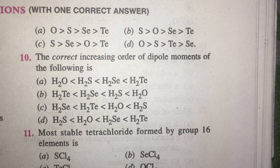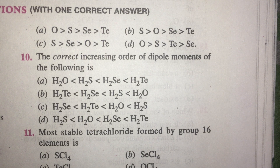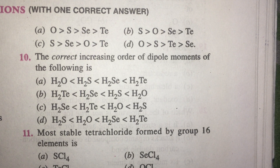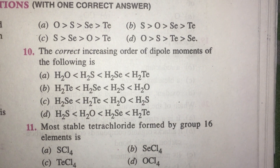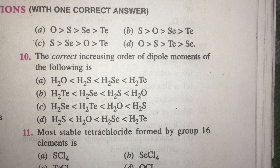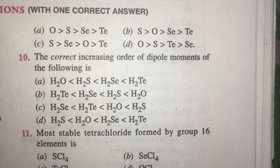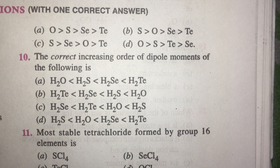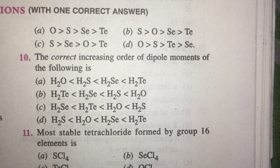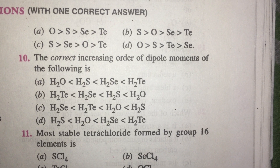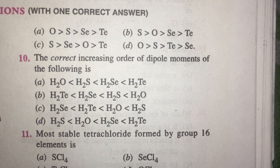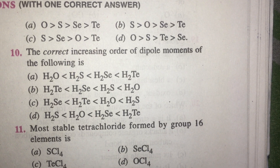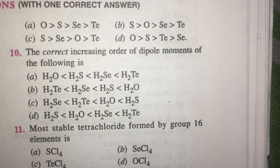The correct increasing order of dipole moment: dipole moment is the product of charge separated and bond length in a covalently bonded molecule. For molecules with more than one bond, take the vector sum of all bond moments. In AB2-type molecules, net dipole moment = 2p̄ cos(θ/2), where θ is the bond angle and p̄ is bond moment. The answer is H2Te < H2Se < H2S < H2O, since oxygen is most electronegative and charge separation is greatest.